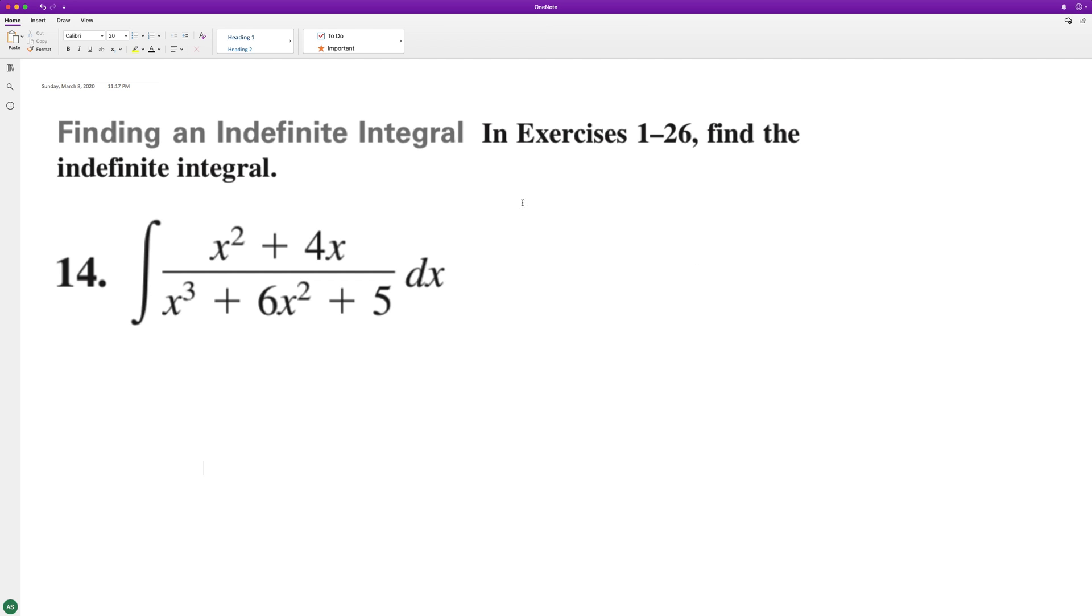We'll set u equal to x cubed plus 6x squared plus 5. Then du is going to be equal to 3x squared plus 12x. We can factor out a 3 from this, and to get du equal to dx we need to multiply it by one-third.